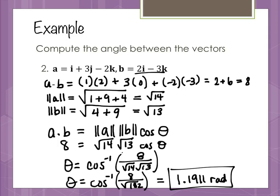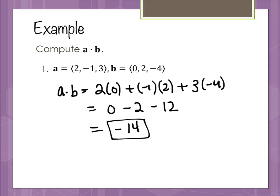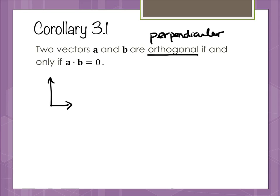There is a relationship in vectors very similar to something from algebra with lines. We have two vectors a and b, and we introduce the word orthogonal, which simply means perpendicular. Two vectors are perpendicular if and only if the dot product is zero. That makes sense because if the dot product is zero, then using the angle formula, the cosine of theta must be zero, meaning the angle is 90 degrees — or pi over 2.